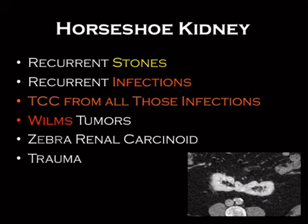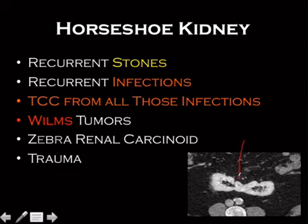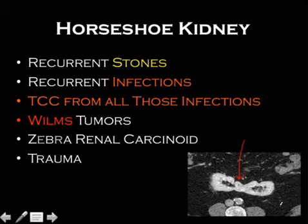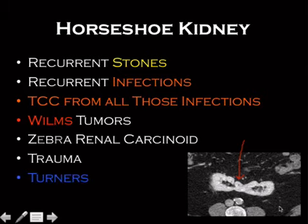Notice the relationship of the horseshoe kidney to the vertebral body. If you had a football helmet coming at you, it would smash the renal isthmus directly into the vertebral body, making it more susceptible to injury. It's not padded and hidden away like native kidneys. So they're more susceptible to trauma, and as a family medicine doctor you should caution these patients not to play contact sports like football.